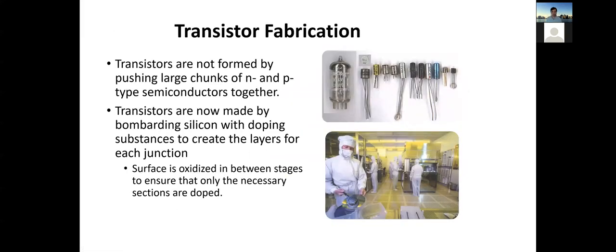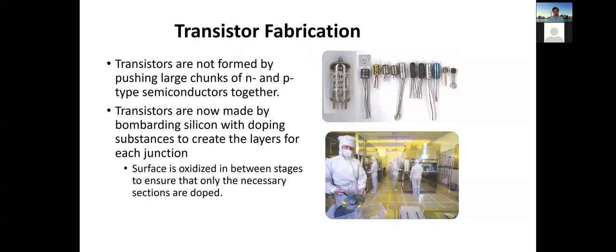Transistors are not formed by pushing large chunks of N and P semiconductor anymore — that's a very old style. Now transistors are made by bombarding silicon with doping substances to create the layers for each junction. The surface is then oxidized between stages to ensure only the necessary sections are doped. That's the only way to make transistors really, really small at the nanometer level. The process is much more complicated than shown here, but it gives you the basic principle.